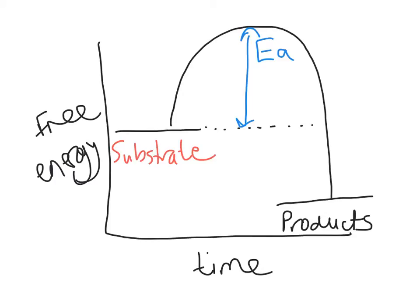What enzymes do is lower the activation energy for a chemical reaction, so less energy is needed to get that reaction going. This is a huge advantage in biological systems where typical temperatures are very low — in the human body, 37 degrees centigrade, which really is relatively low. We'll be moving on now to look at exactly how enzymes lower this activation energy, with reference to their active site.